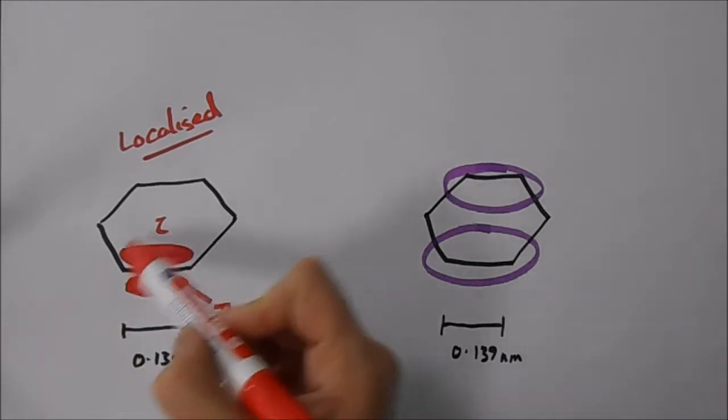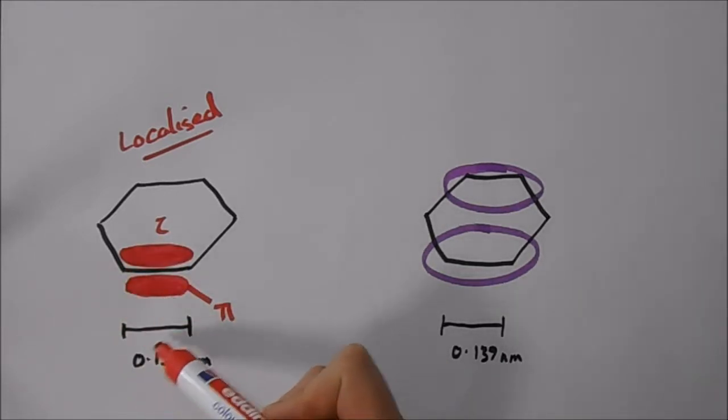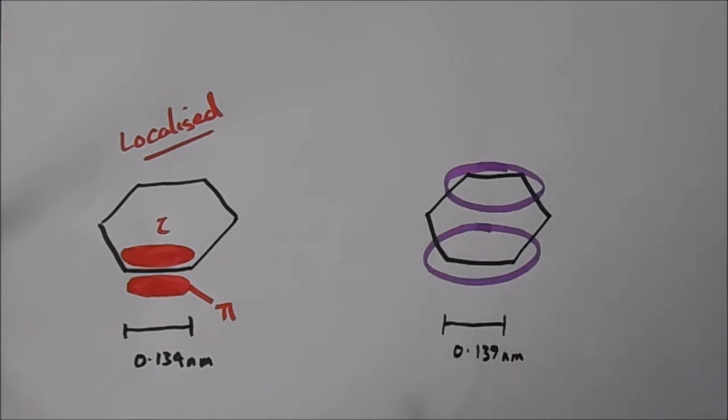If we have fewer electrons in the space, or if we have a bigger space with the same amount of electrons, we will reduce the electron density. We will reduce the number of electrons in a certain space.